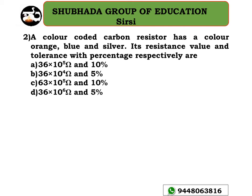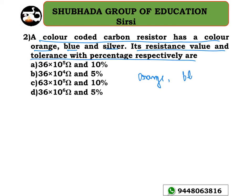Let's discuss the next problem. The problem says that a color-coded carbon resistor has the color sequence orange, orange, blue, and silver. Find its resistance value and tolerance percentage. So the given color codes are orange, orange, blue, and silver.